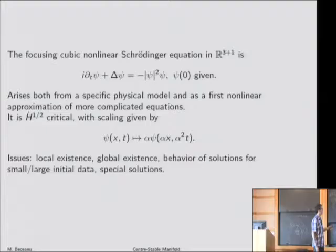Since this is a complex valued function, i here is the imaginary unit. Delta is the Laplacian. This is a semi-linear equation because we start with the linear Schrödinger equation, which has this form, and we add one extra non-linear term in the unknown function.